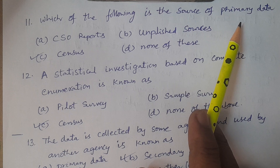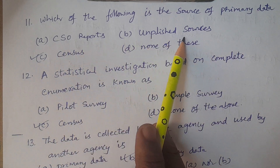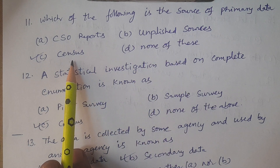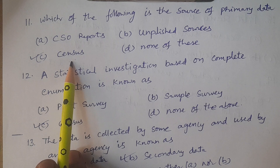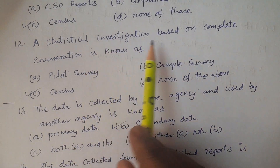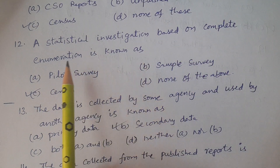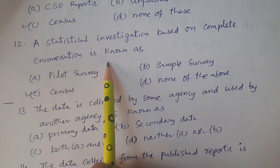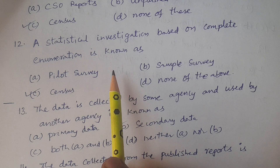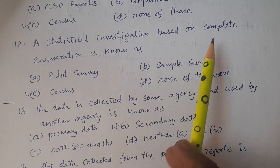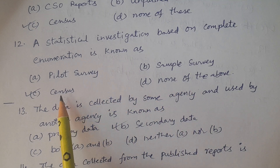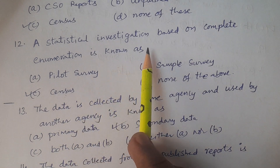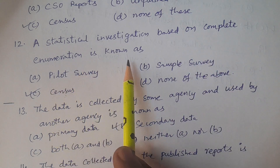A statistical investigation based on complete enumeration — that is, measuring the entire population, collecting information from the entire population — is known as: A. Pilot survey, B. Sample survey, C. Census, D. None of the above. The answer is Census.